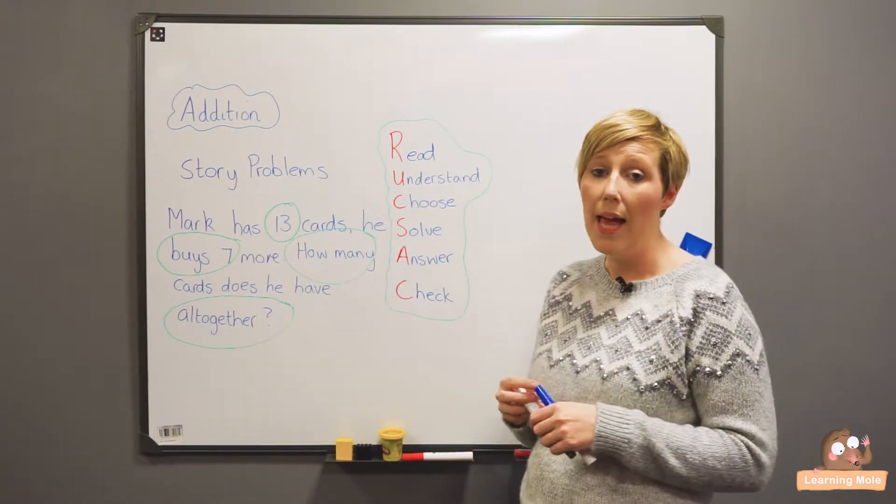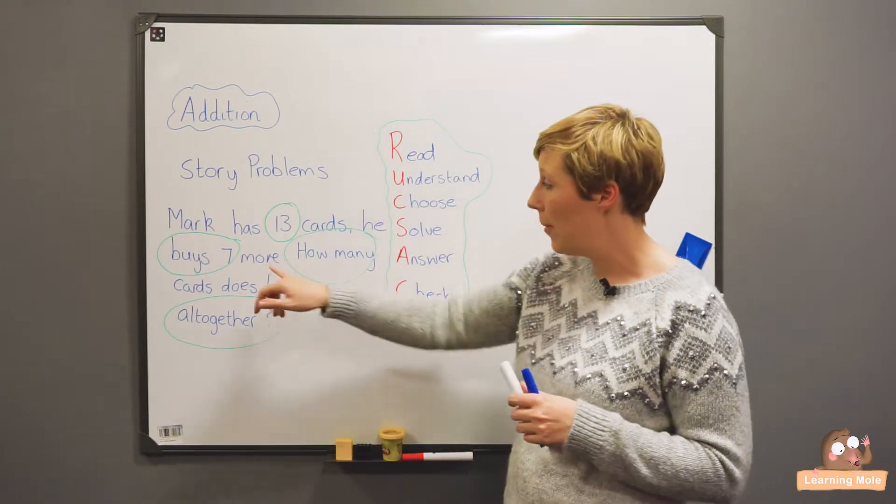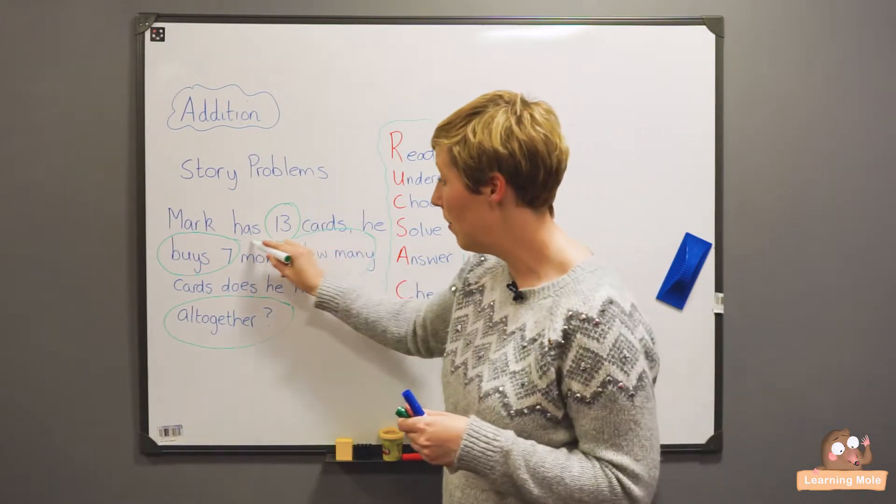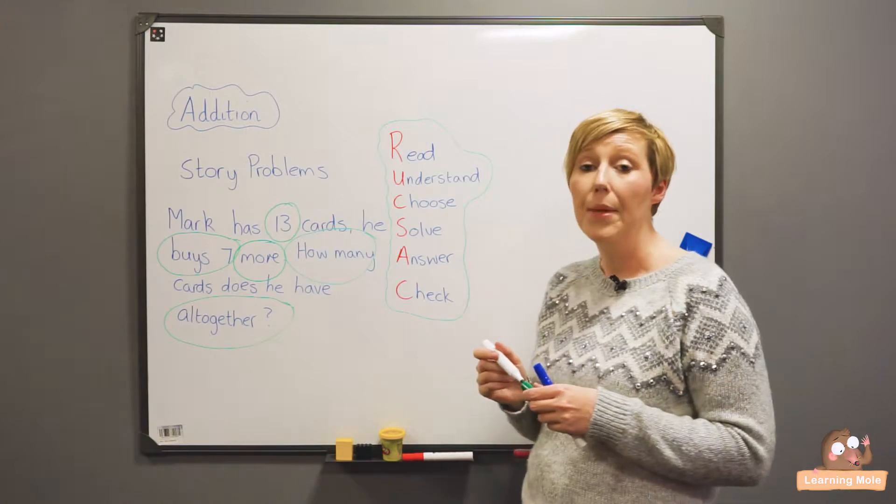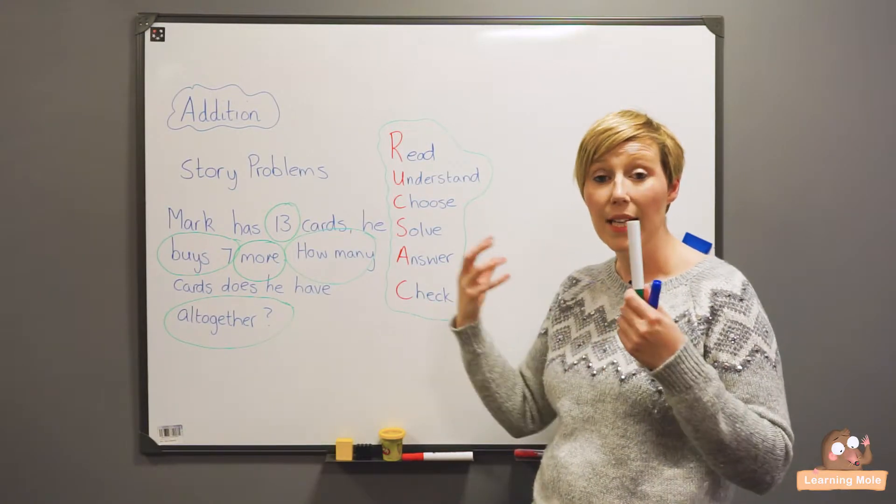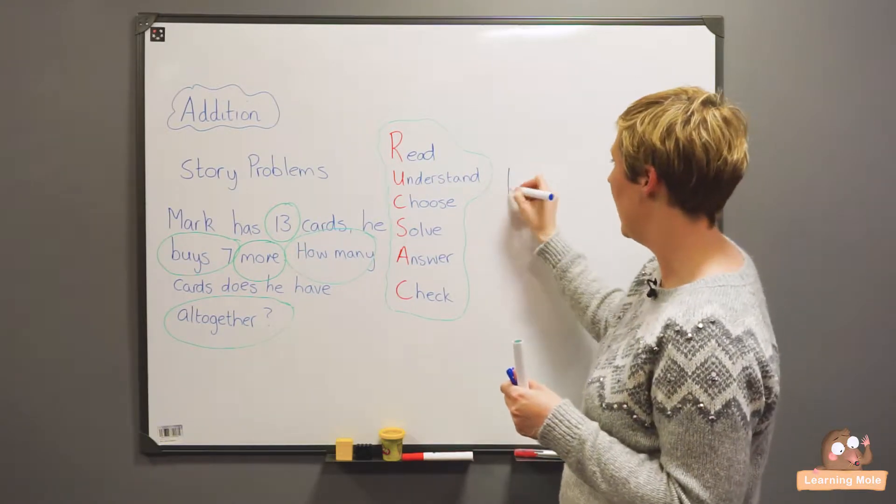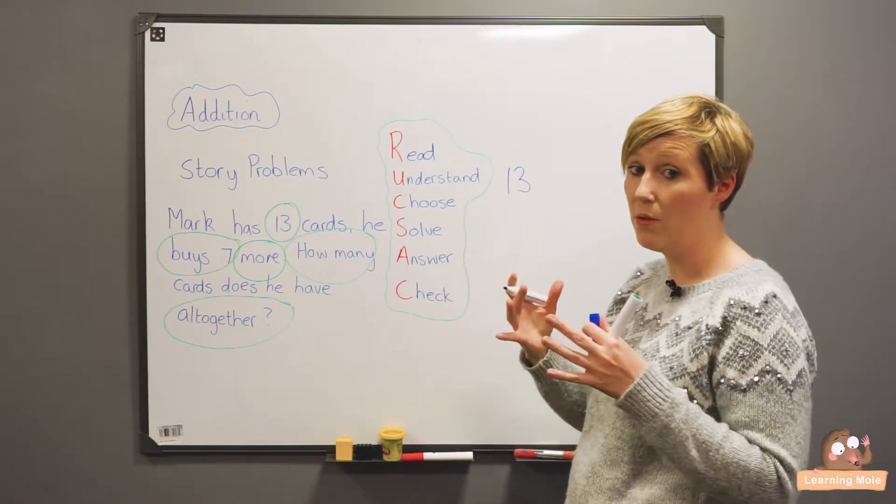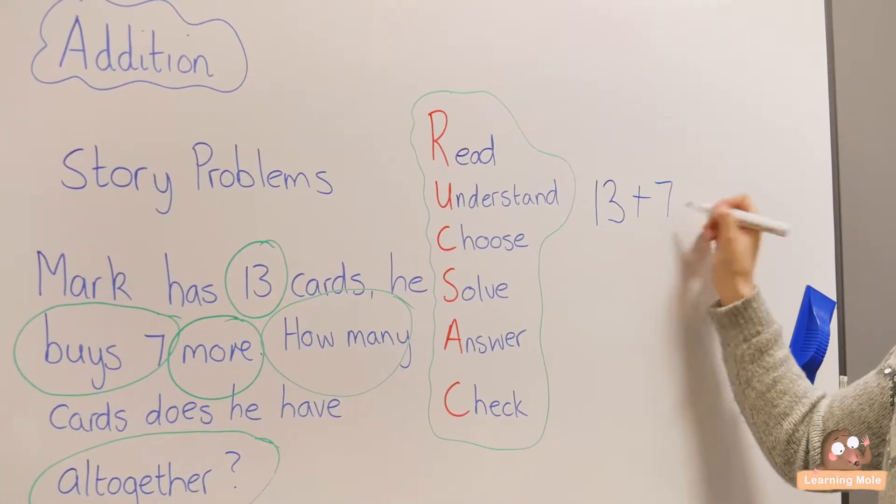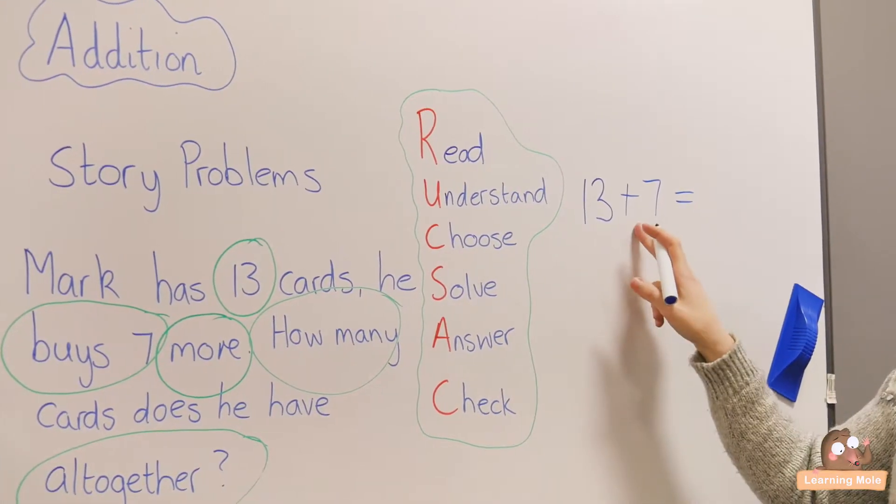Doesn't really matter what way I do my calculation. I would also say actually more is very important there because you want to show that that is adding, the numbers getting bigger. So I'm going to write my calculation down. So I'm going to say 13. He has 13. He actually goes into the shop. He buys 7 more. So I've now chosen my operation.